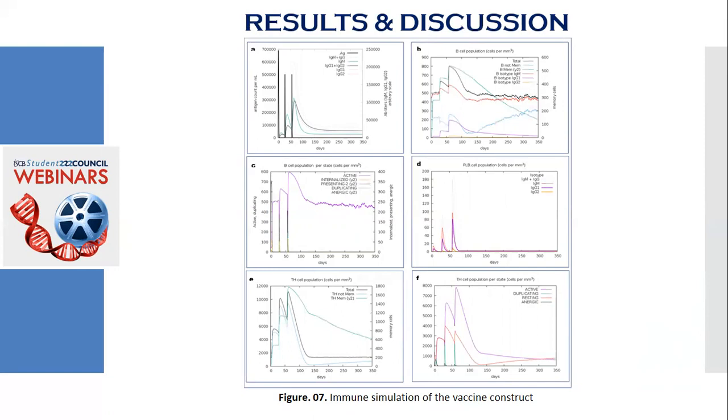Graph E depicts the enhancement of the helper T cell population over the course of the three injections. The graph F finally shows the increment in the helper T cell population per state over the course of the vaccination.